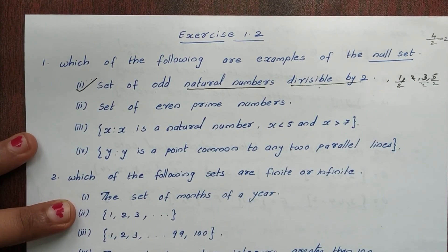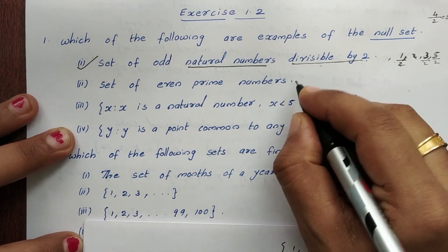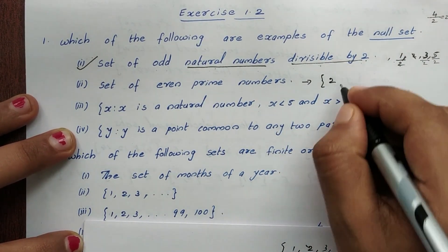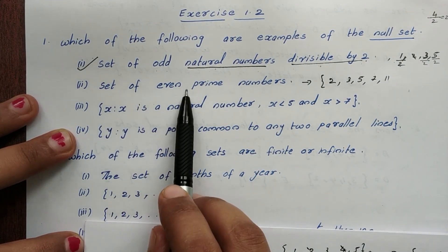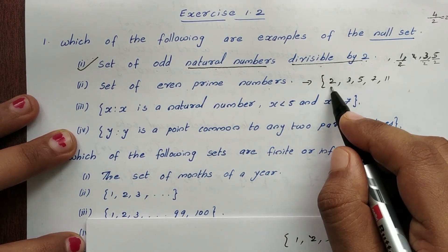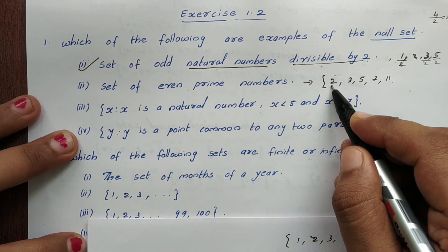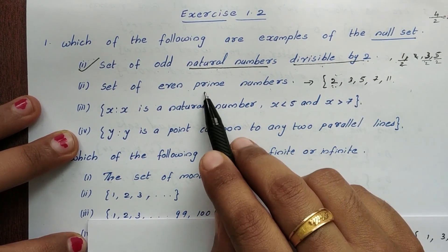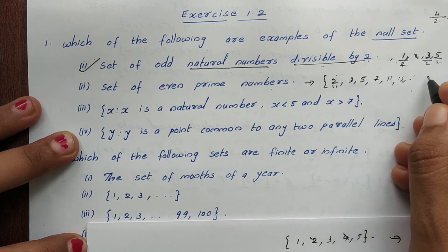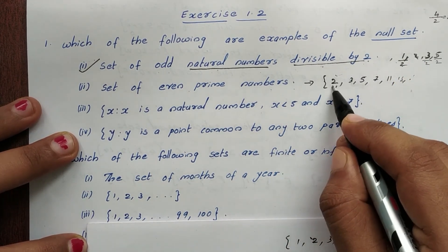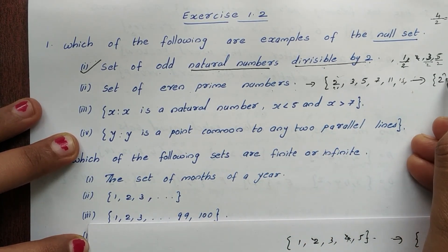Second example: set of even prime numbers. Prime numbers — the only even prime number is 2. So this is not a null set, since 2 is an even prime number.